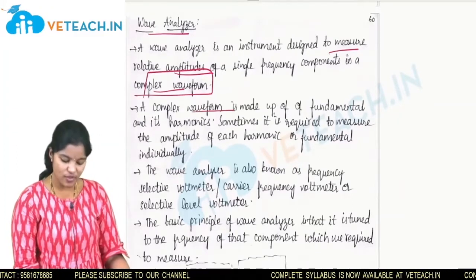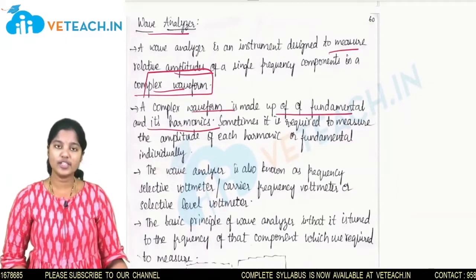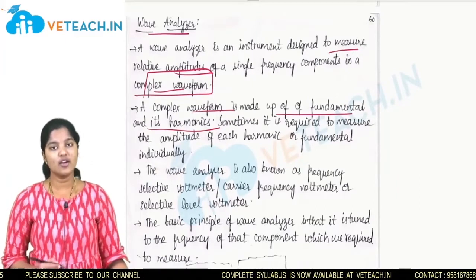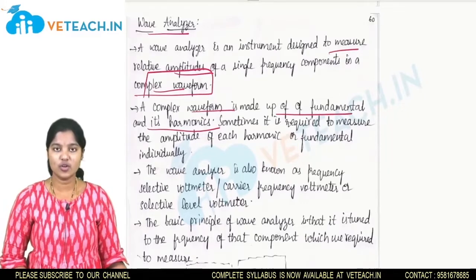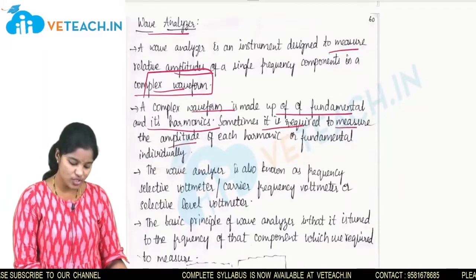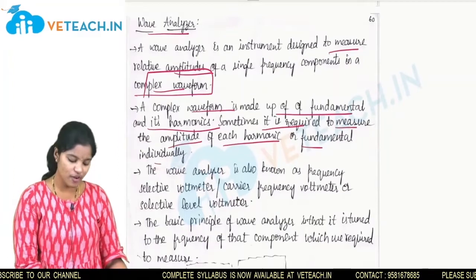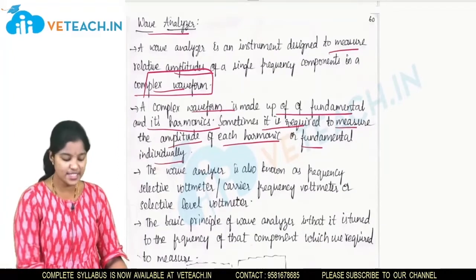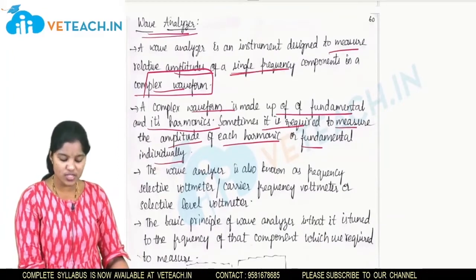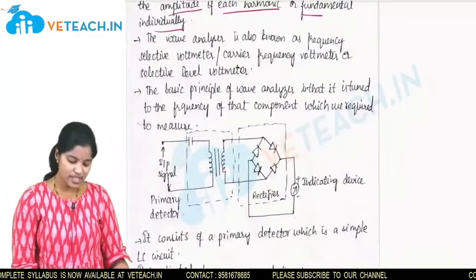A complex waveform is made up of fundamental and its harmonics. Fundamental frequency will be there and harmonic frequency also will be there. Sometimes it is required to measure the amplitude of each harmonic or fundamental frequency individually, so we use a wave analyzer because it measures only single frequency components.